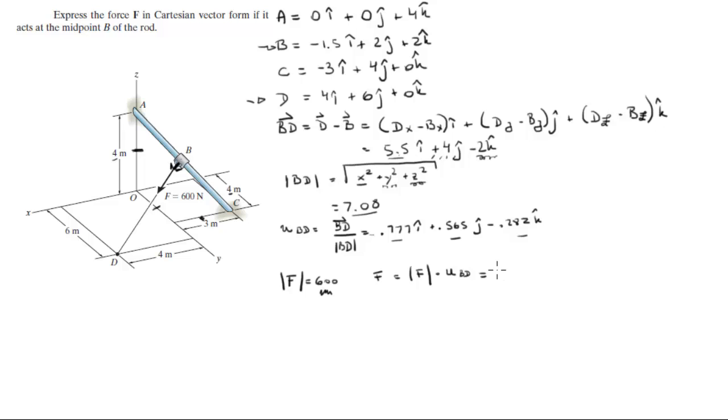And you're gonna get the Cartesian vector form which comes out to be 466.2i plus 339j minus 169.2k. Final answer.